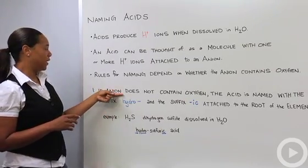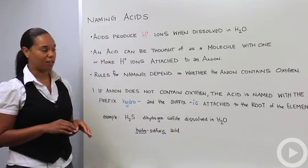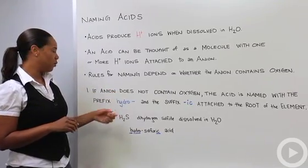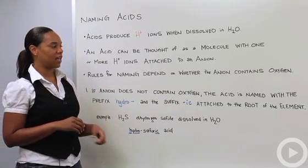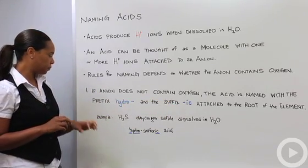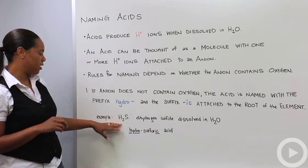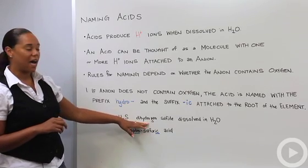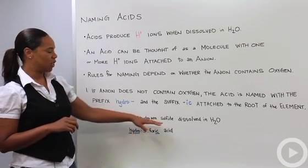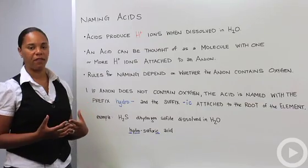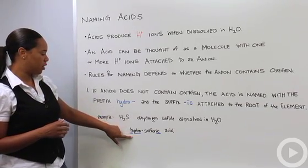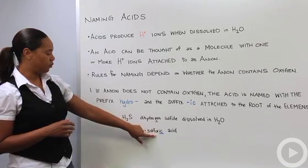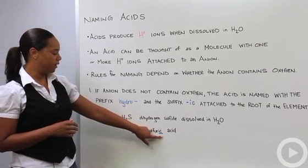Let's go with the first rule: if the anion does not contain oxygen, the acid is named with the prefix hydro- and the suffix -ic attached to the root of the element. The example I have here is H2S, which is dihydrogen sulfide. When we dissolve it in water, we get the acidic form, and it will be named hydro- for the prefix, then the root sulfur, and then -ic on the end, so we get hydrosulfuric acid from H2S.